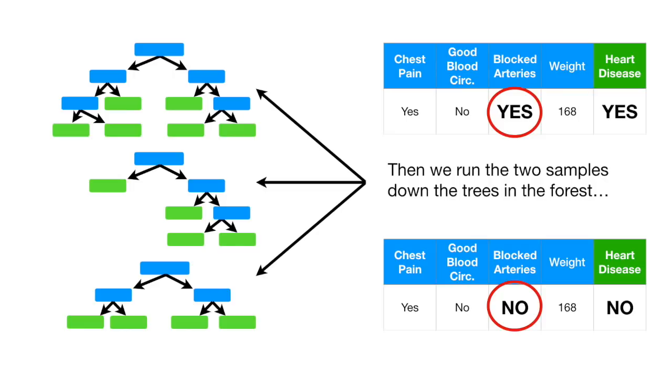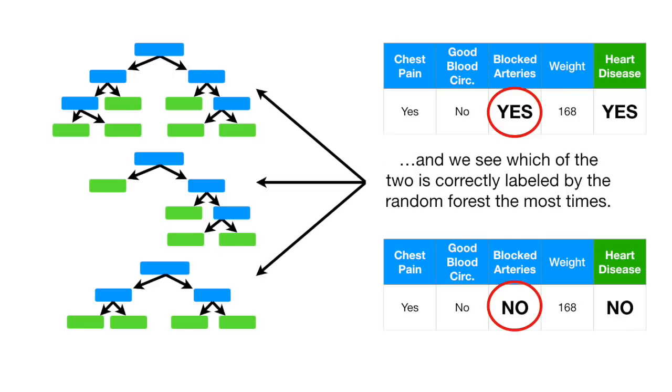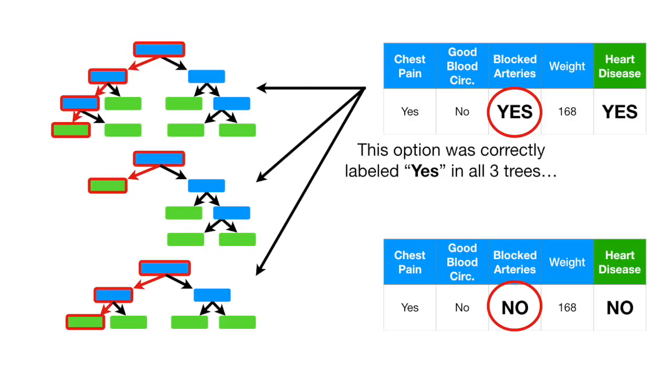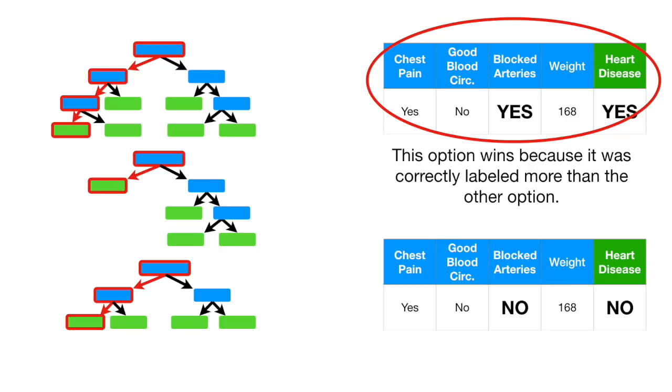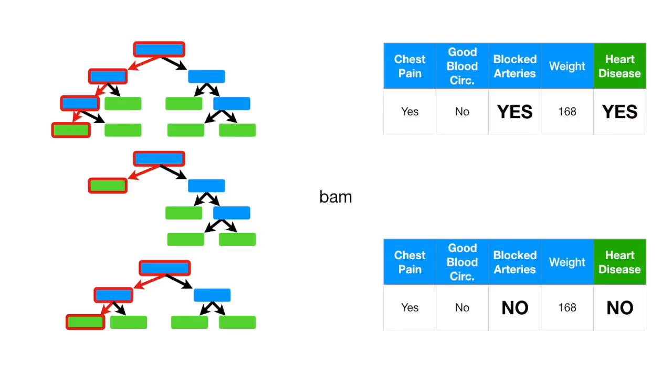Then we run the two samples down the trees in the forest. And we see which of the two is correctly labeled by the random forest the most times. This option was correctly labeled YES in all three trees. This option was only correctly labeled NO in one tree. This option wins because it was correctly labeled more than the other option. Bam! We filled in the missing data and we've classified our sample.